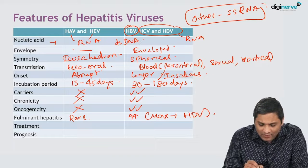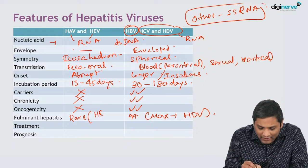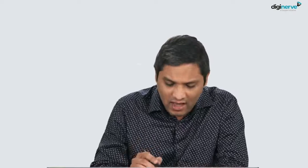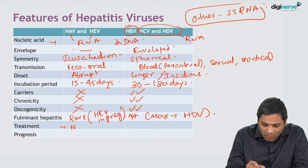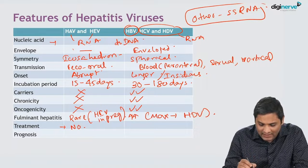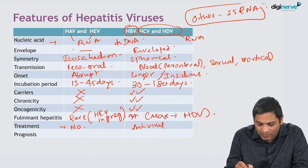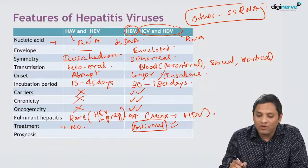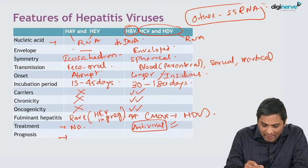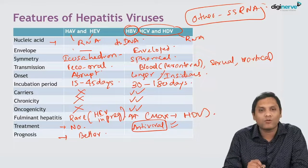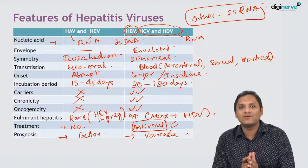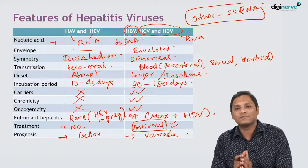Fulminant hepatitis is rare with A and E, except hepatitis E in pregnancy, where it can cause fulminant hepatitis. There are no antiviral drugs available for hepatitis A and E, but antiviral drugs are available for treatment of hepatitis B, C, and to some extent hepatitis D. Prognosis wise, hepatitis A and E have a better prognosis, whereas B, C, and D have a variable prognosis.